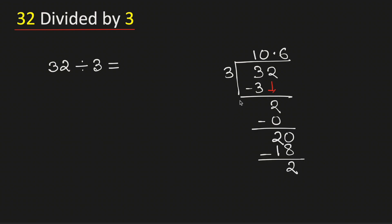Again, 2 is less than 3. That is why we will borrow one zero, and we know that 3 times 6 is 18. Subtract, we get 2. As we are repeatedly getting 2, we will be having 6, 6, 6, and so on.